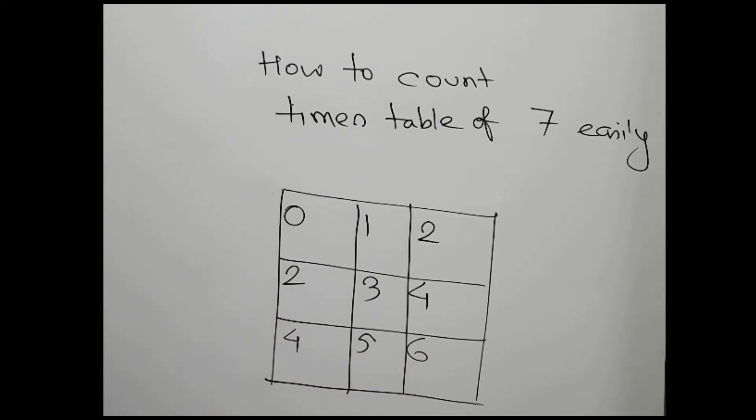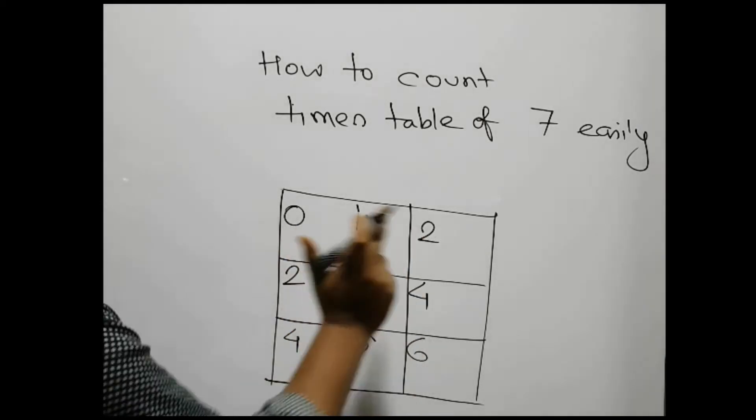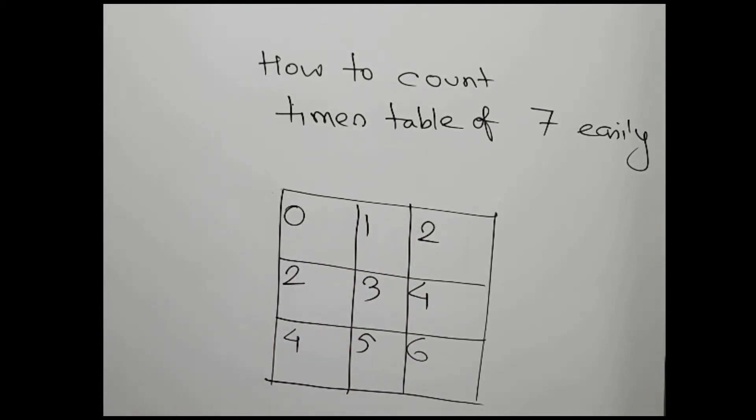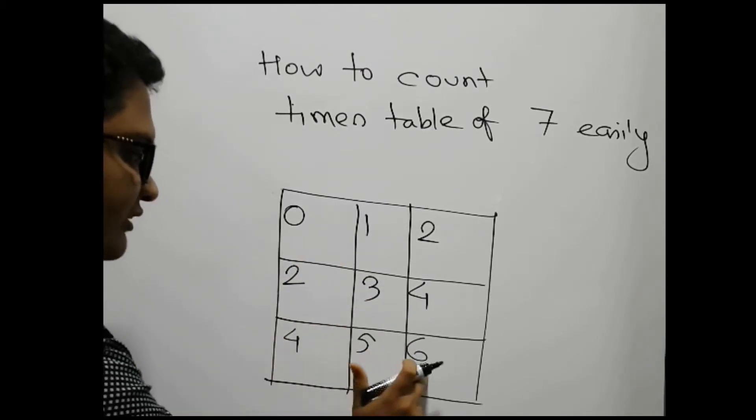Let me repeat what I did. First we write 0, 1, 2, and then we start from where it ended in the previous row. So we start from 2 again: 2, 3, 4. Then we write 4, 5, 6.